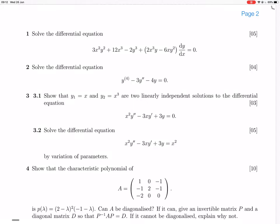Okay, so we are doing 3.2 now. Solving this differential equation by variation of parameters. We know that solutions to the homogeneous version of the equation are x and x cubed, because that's given in the previous question.